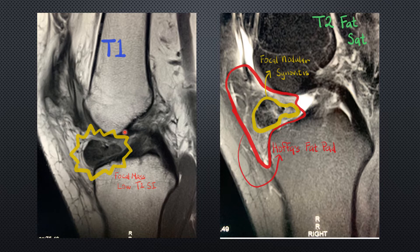The treatment for PVNS and focal nodular synovitis is synovectomy. When it is focal, it is easier to remove and the recurrence rate is much lower than in the diffuse type — that is why it is important to make this distinction on imaging. This is a benign condition with no risk of metastasis. A key differential is synovial chondromatosis, which is also a synovial metaplasia but typically calcifies and becomes synovial osteochondromatosis, whereas PVNS never calcifies. It is also important to remember that PVNS is monoarticular — it only occurs in one joint.